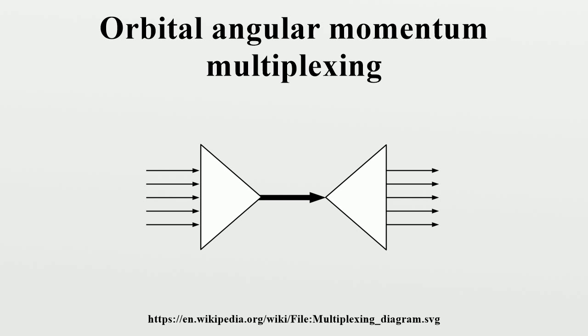Radio frequency: An experiment in 2011 demonstrated OAM multiplexing of two incoherent radio signals over a distance of 442 meters. It has been claimed that OAM does not improve on what can be achieved with conventional linear momentum-based RF systems which already use MIMO.